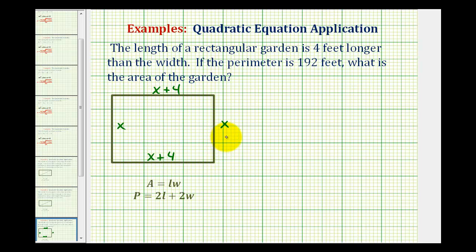And opposite sides of a rectangle are equal in length. So because the perimeter is equal to 192 feet, we can set up an equation involving x. The perimeter is the distance around the rectangle, which would be two times x plus two times x plus four. This would represent the perimeter, which is equal to 192 feet.